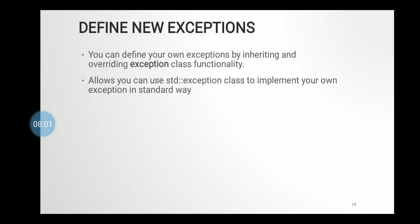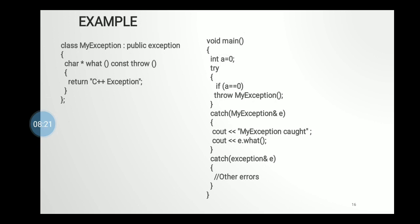If you want to handle user-defined exceptions — that is, create your own exception — you can do so by using the std::exception class. You create a class, for example MyException, that inherits from the public exception class, and write the message to be shown when the exception occurs. Then in your program you use throw MyException and catch MyException to create and handle user-defined exceptions.